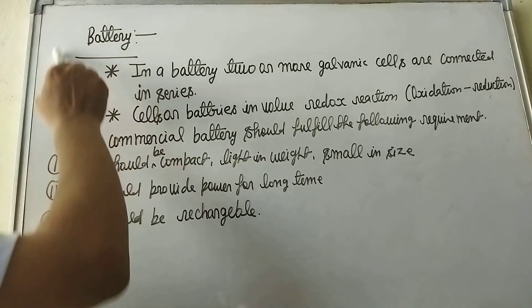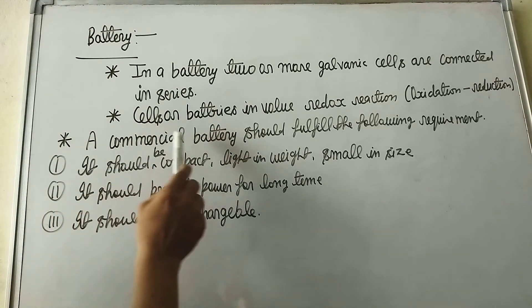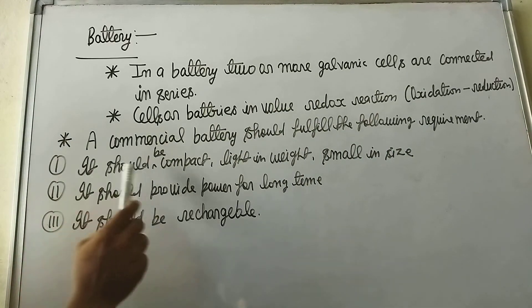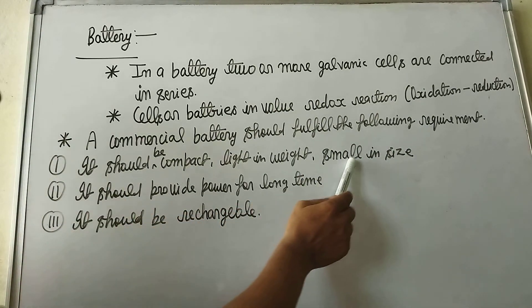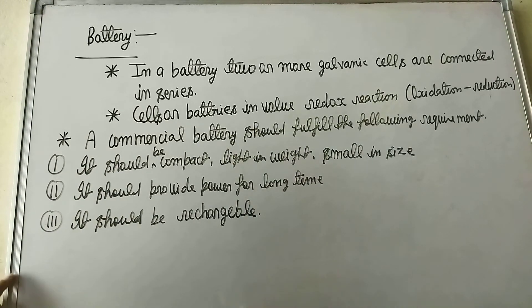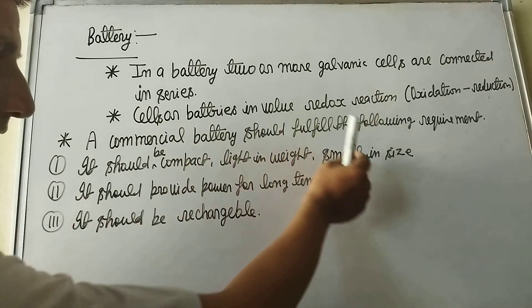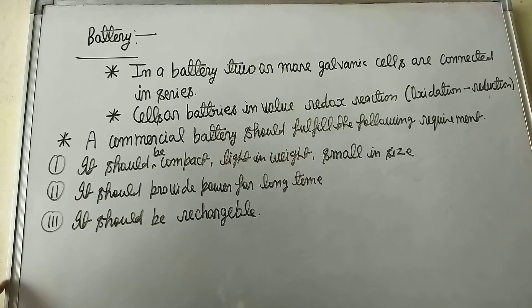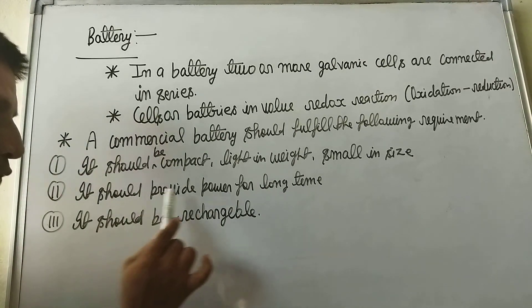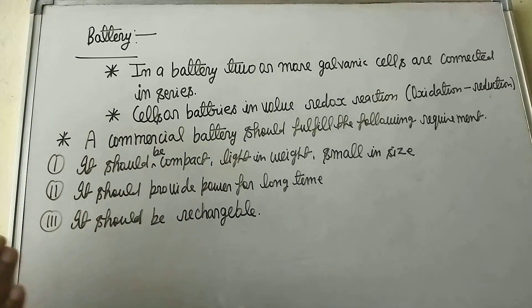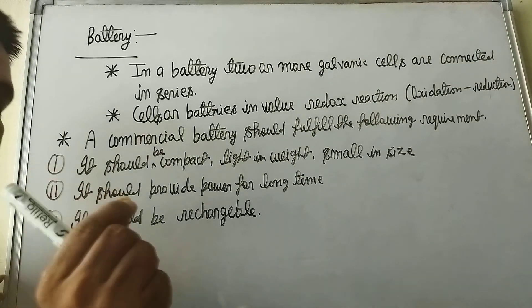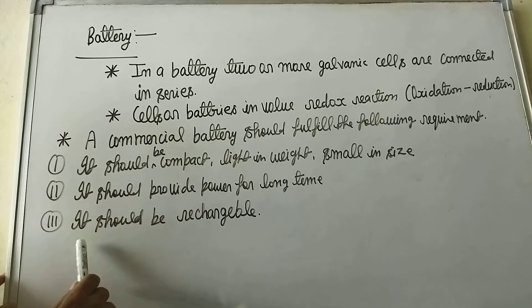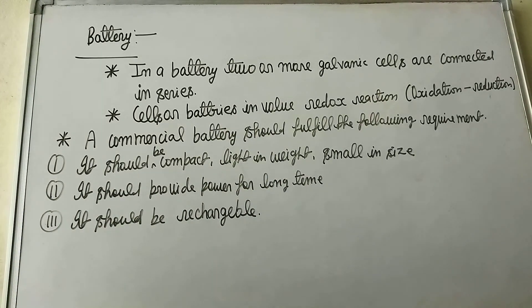Important points about a good battery: a commercial battery should fulfill the following requirements. Number one, it should be compact, light in weight, small in size. Number two, it should provide power for a long time. Number three, it should be rechargeable.